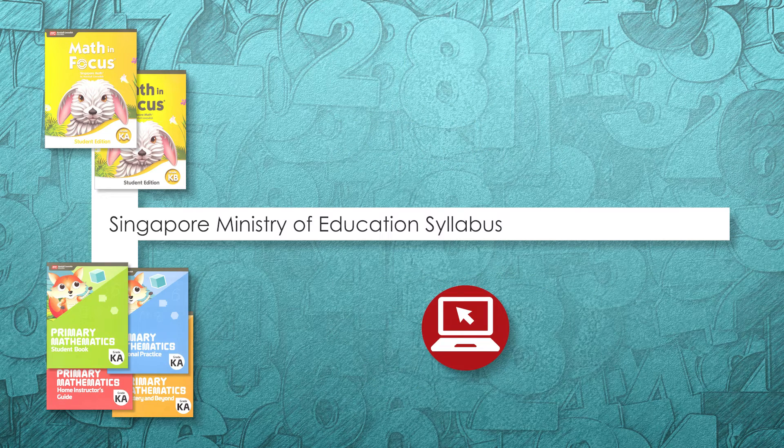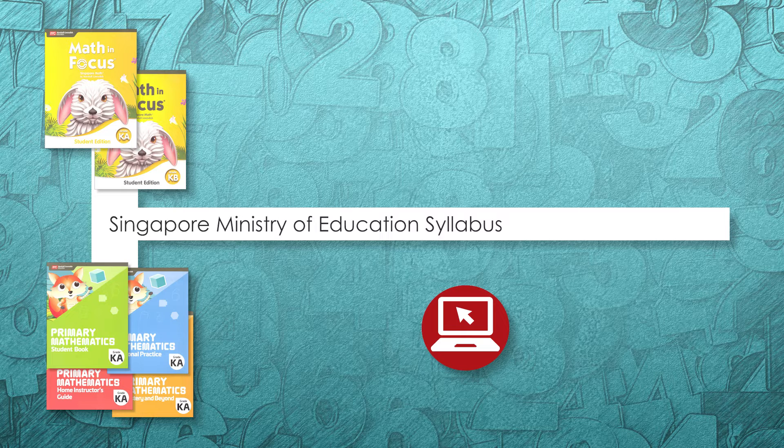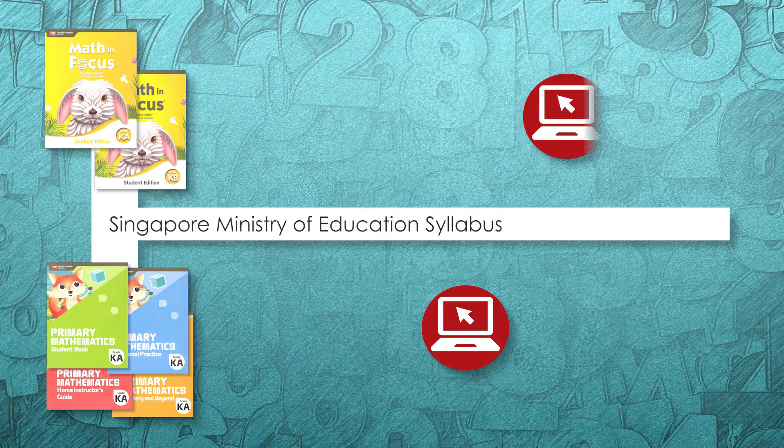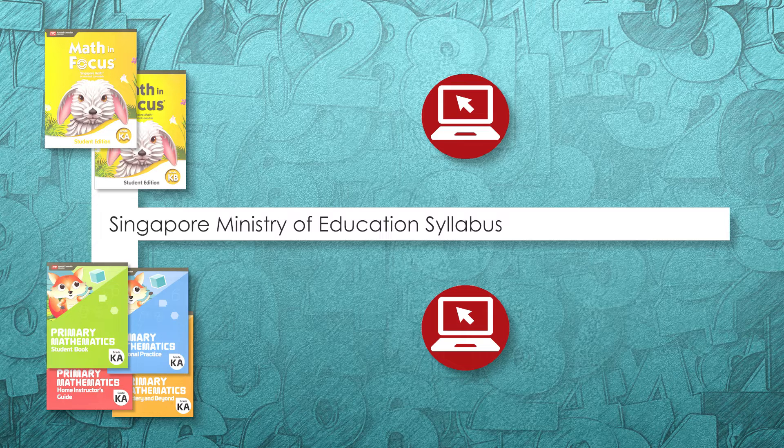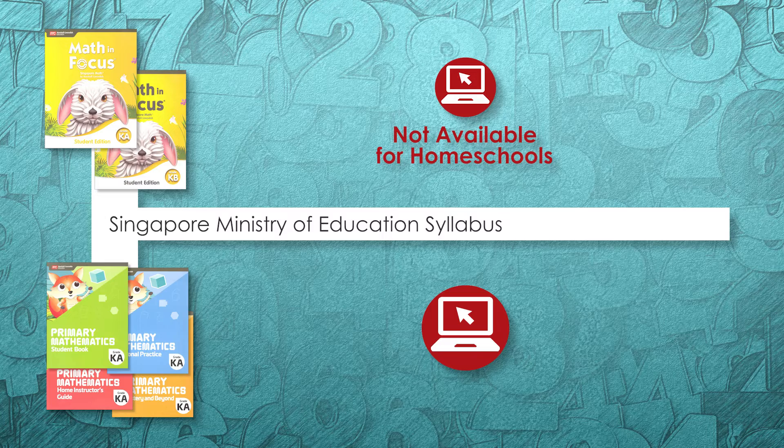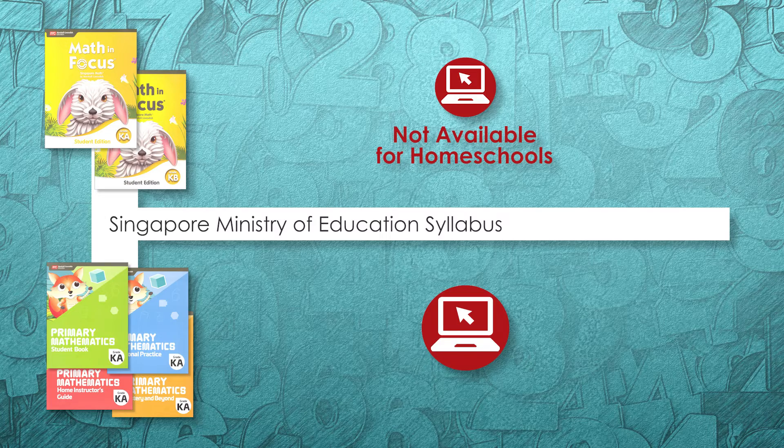Primary Math has a digital component available that includes printable graphs, number cards, and other resources such as the home instructor or teacher guide, the reteach, and enrichment books in a PDF format. Math in Focus 2020 similarly has an online component called ED that includes access to instructional resources like the enrichment and reteach books and data reporting. However, it is set up for a classroom and is not available to homeschoolers. It is important to note that these online resources are not essential to the Math in Focus or Primary Math programs.